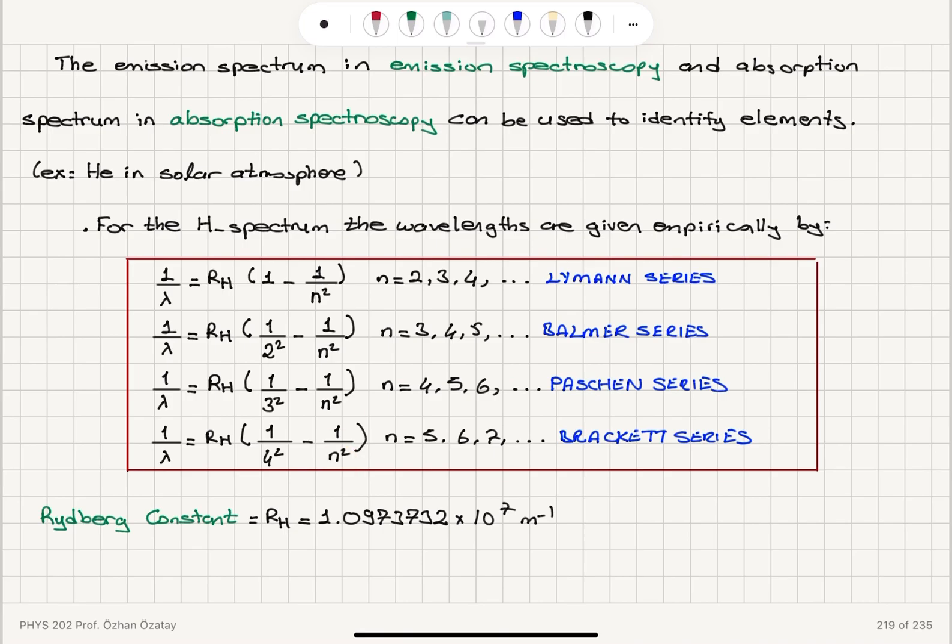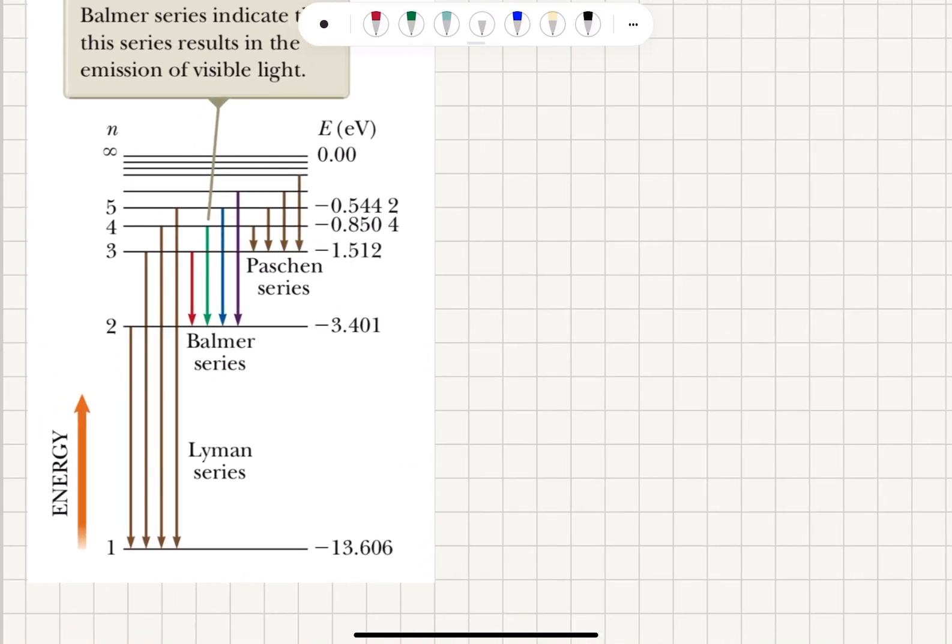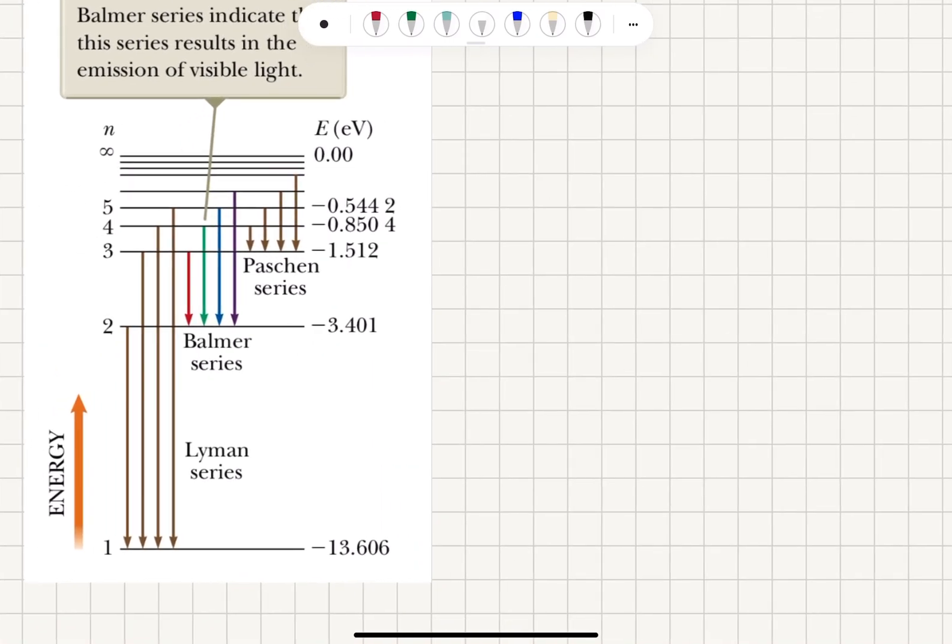And this n is n initial, which is 2, 3, 4 for Lyman; 3, 4, 5 for Balmer; 4, 5, 6 for Paschen; and 5, 6, 7 for Brackett series. This can be seen easily in this energy level diagram.